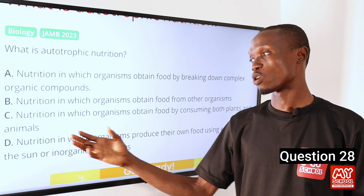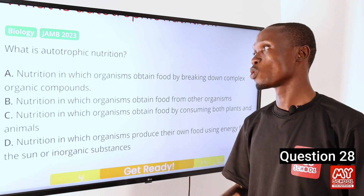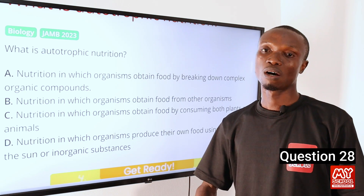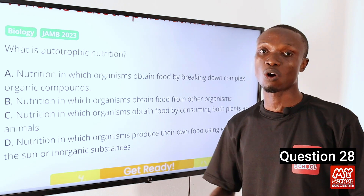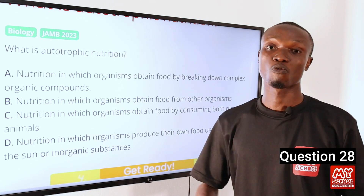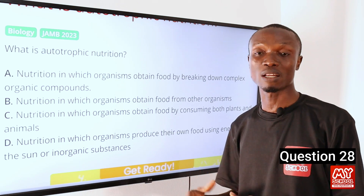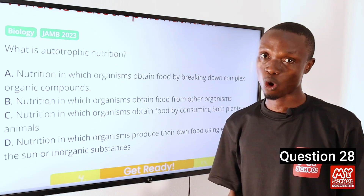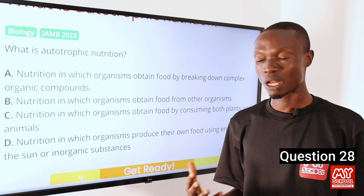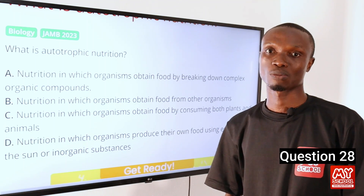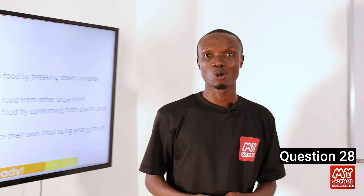The answer is option D. Autotrophic nutrition is a type of nutrition in which organisms have the ability to make their own food from simple inorganic substances such as carbon dioxide and water using sunlight. So option D is the correct option.